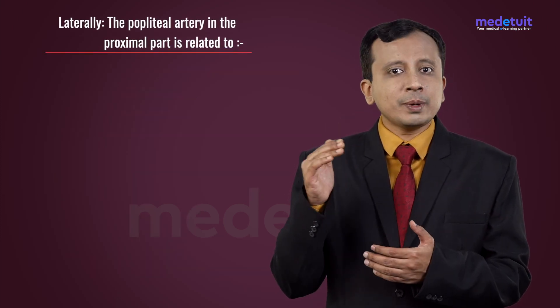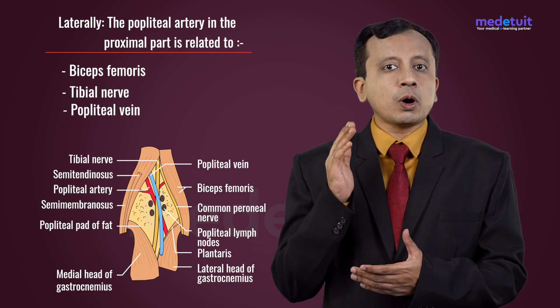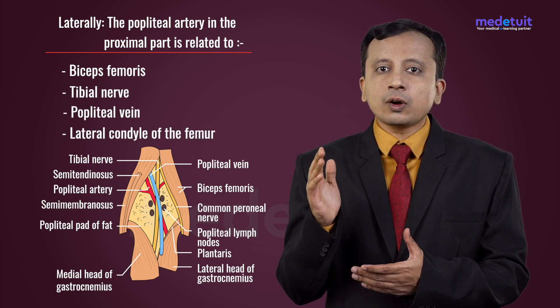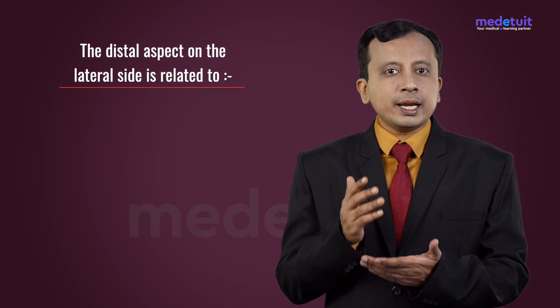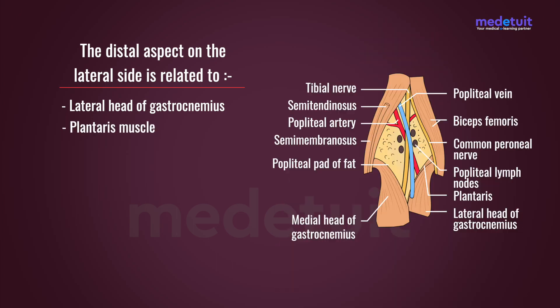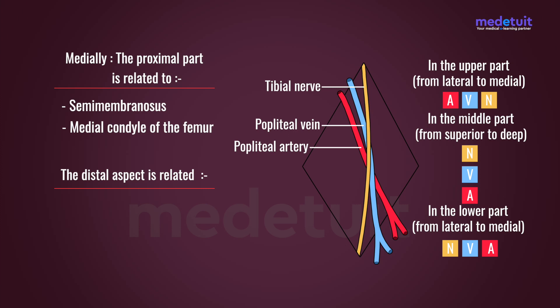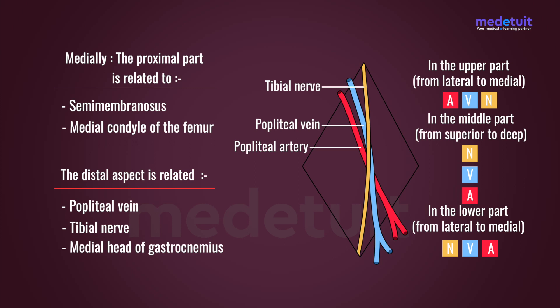Laterally, the popliteal artery in the proximal part is related to the biceps femoris, the tibial nerve, the popliteal vein, and the lateral condyle of the femur. In the distal aspect on the lateral side, it is related to the lateral head of gastrocnemius and plantaris muscle. On the medial side, it is related to semimembranosus and the medial condyle of the femur. In the distal medial aspect, it is related to the popliteal vein, the tibial nerve, and the medial head of gastrocnemius.